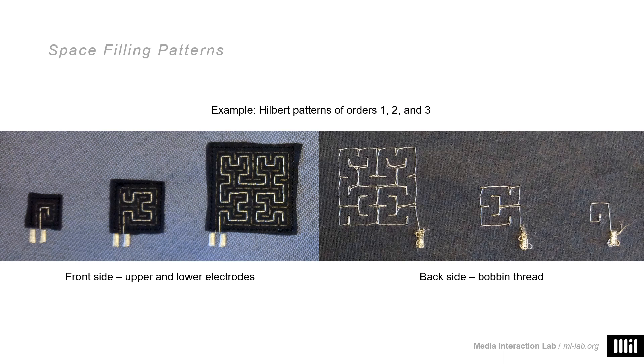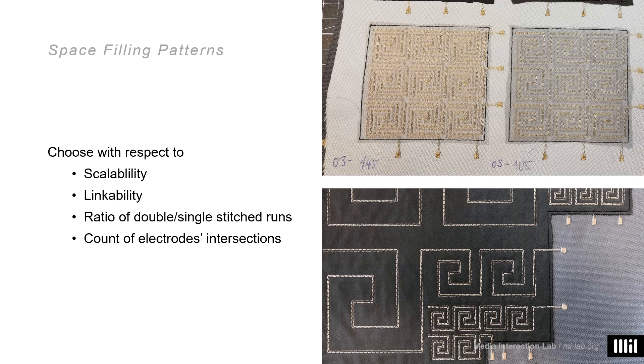There you see an example of a resulting sensor, front side and back side. Note that the white bobbin thread on the back side simply holds the electrode stitches in place, but that's regular yarn, so only the electrode traces on top are actual conductive yarn. You can also fabricate them in a number of scales due to the fractal property of this particular pattern here, without having to sacrifice resolution and without causing any dead spots. It also gives you control about several design options. You can link multiple patterns, you can combine different scales depending on your required granularity however you like.